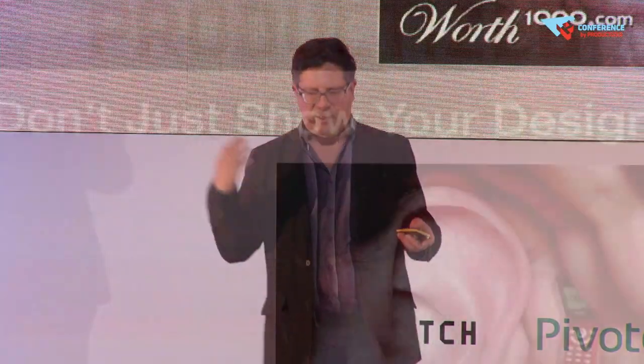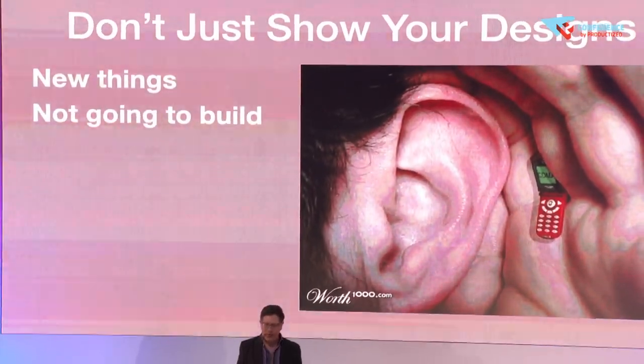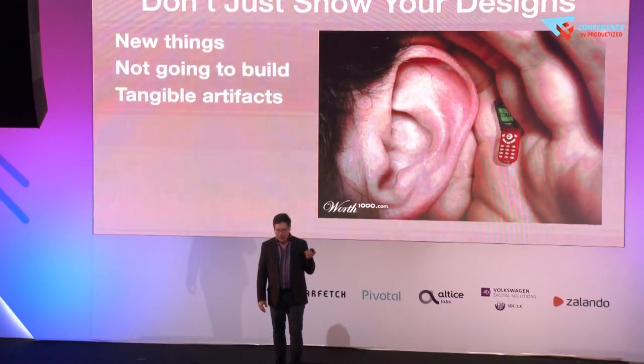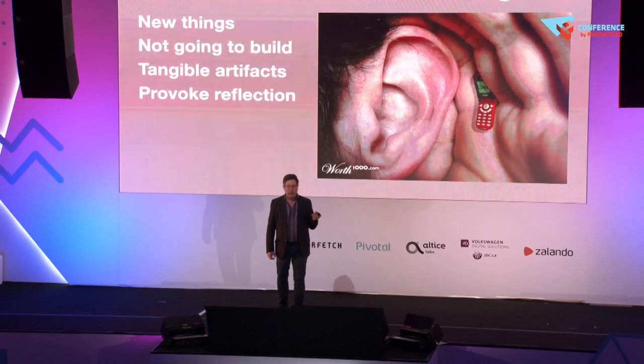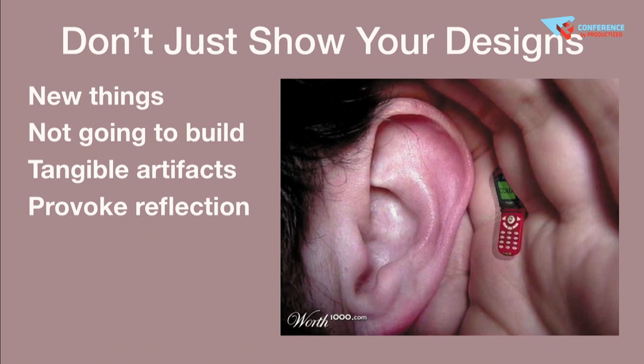When it comes to showing prototypes, I find a lot of teams default to taking their design process artifacts and testing them, missing the opportunity to create new things to show in the field — things that are not part of what you're planning to build, but are tangible, experiential, visible artifacts that people can play with or react to, as a way to provoke a deeper reflection on the underlying issues you want to understand. Imagine this ridiculous flip phone — you are not going to make this product, but you can use it as an artifact to have a deeper conversation about form factor, losing the device, interacting with the keypad, and so on.